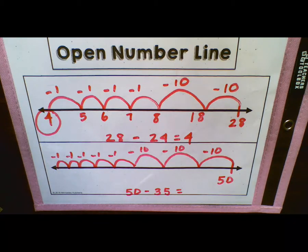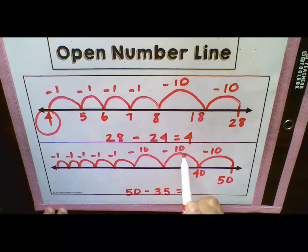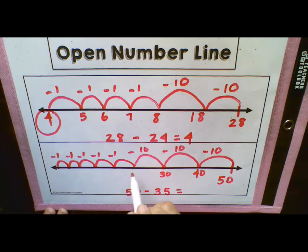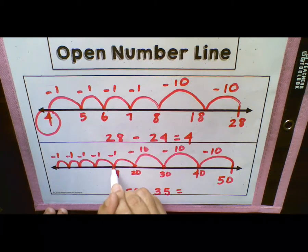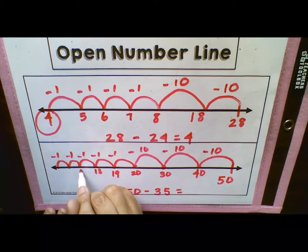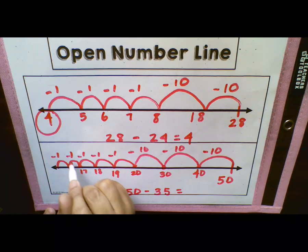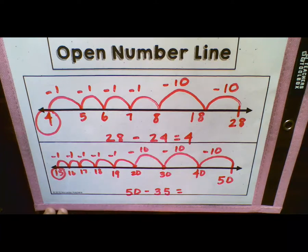So we have our 50 and we subtract 10, which gives us 40. We have 40, subtract 10, which gives us 30. We have 30, subtract 10, which gives us 20. Now we have 20 and we subtract 1 — 20 minus 1 is 19, 19 minus 1 is 18, 18 minus 1 is 17, 17 minus 1 is 16, and 16 minus 1 is 15. So our final answer is going to be 15.